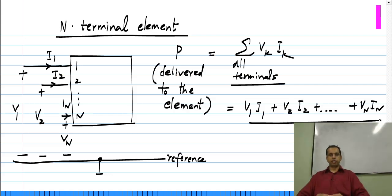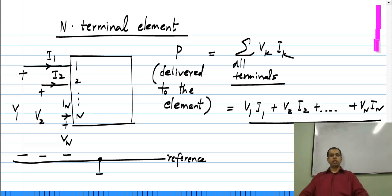Now it appears there is some ambiguity, because what is this reference node with respect to which we measure all the voltages? It can be anything — it could even be one of the N terminals of the element. But if the reference can be anything, it looks like the power P has some ambiguity in the number we calculate. What I am going to show is that regardless of what reference you choose, there is no ambiguity in the definition of power.